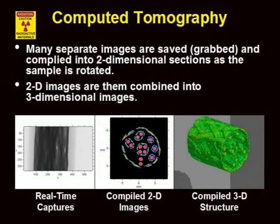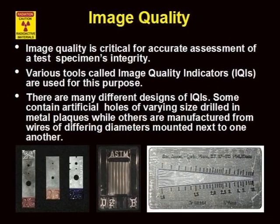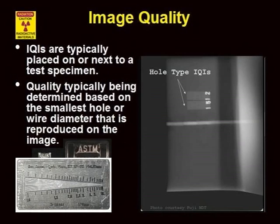The detail visible in the computed images is very difficult to detect from a single source image. Image quality indicators are used to assess the image quality — there are many different designs. The indicators provide a means of measuring the resolution of fine features and also to measure the detectable amount of change in thickness. The image quality indicator is placed next to the test article and becomes part of the radiographic image. The smallest feature detectable on the image quality indicator provides a measure of the image quality.